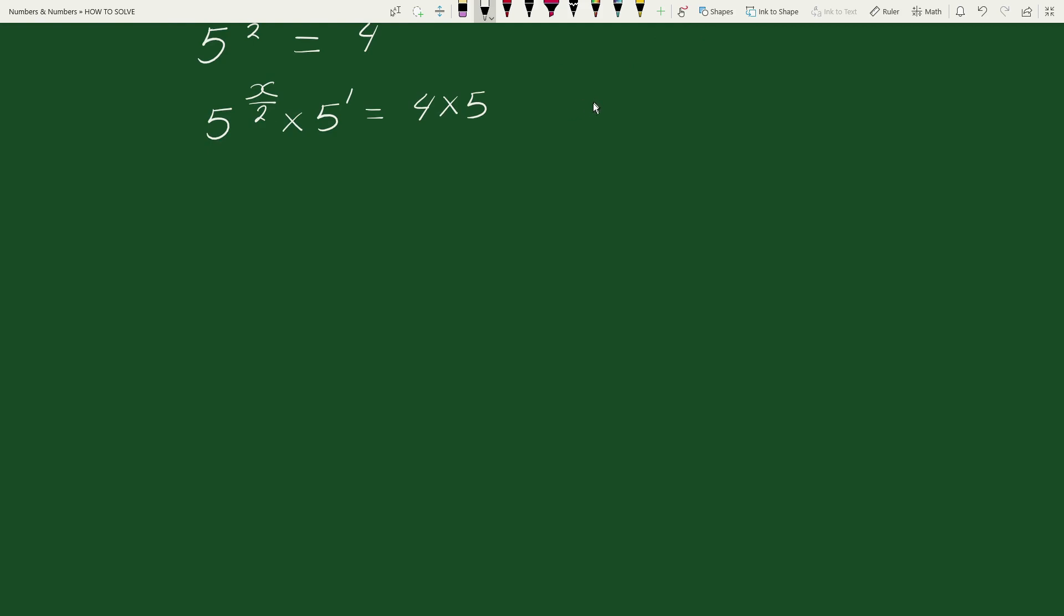Using the exponential rule a to the power m times a to the power n equals a to the power m plus n, we can write this as 5 to the power x by 2 plus 1 equals 4 times 5 which is 20.